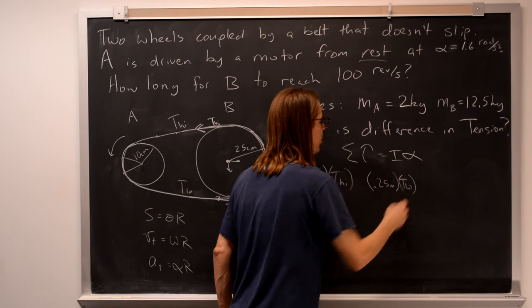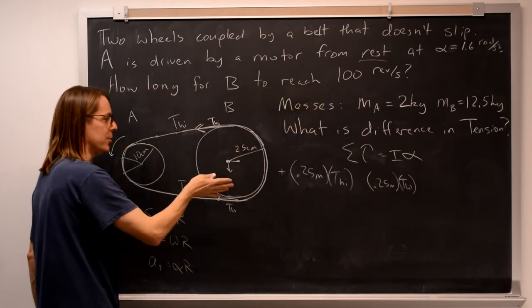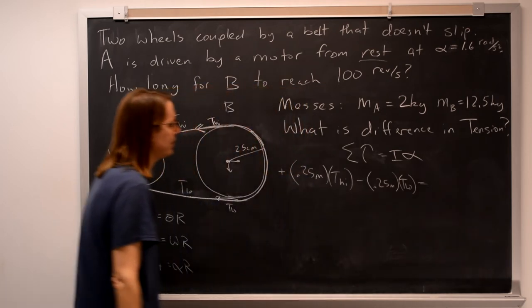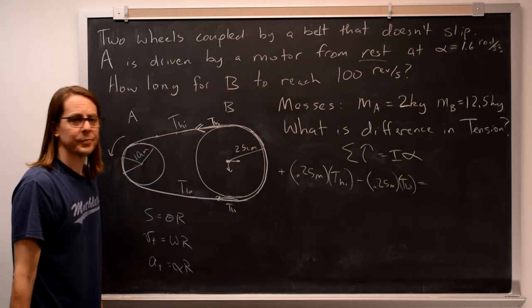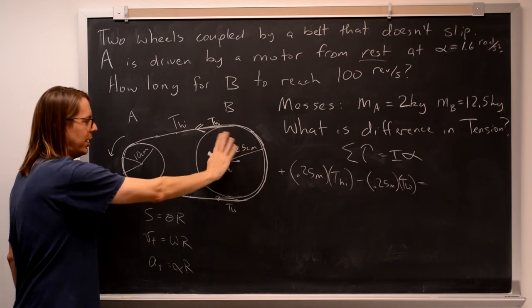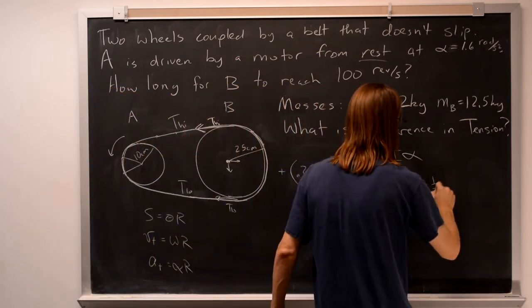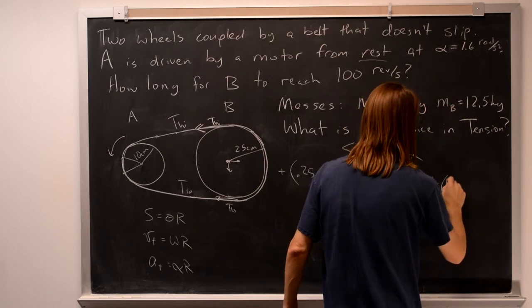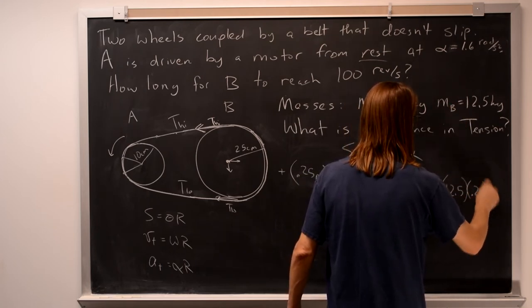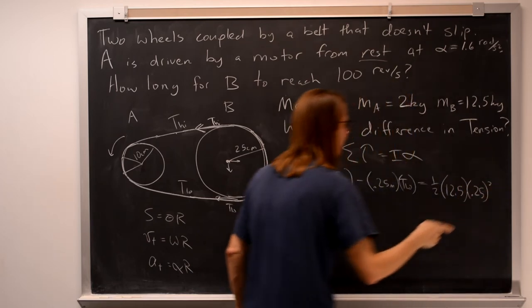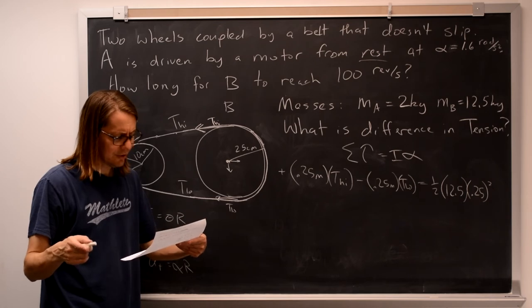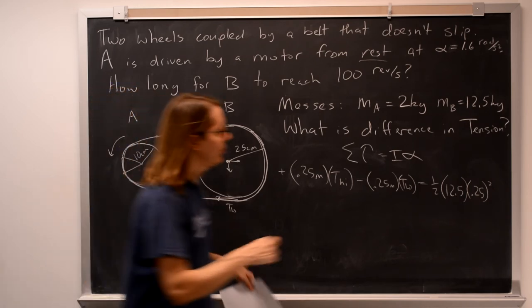And then we have R again for the lower tension, T low. And that's pulling it clockwise, so that's negative. And on the other side, we have the moment, and that's just of the disk. We're just considering this one object, the disk. So 1 half MR squared, M was 12.5 kilograms, R was 0.25 squared. And then we have alpha. Alpha we got from the previous problem. It was 0.64 radians per second squared.